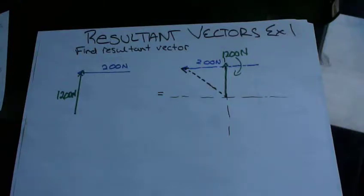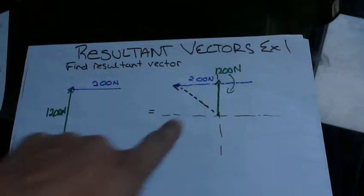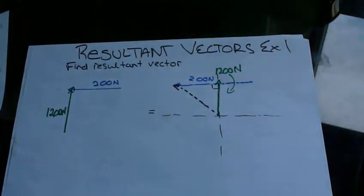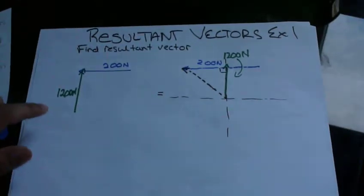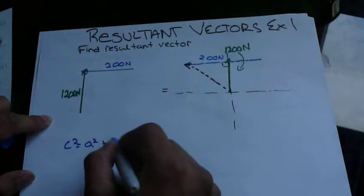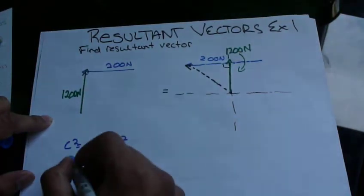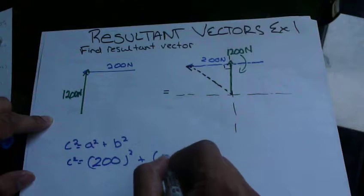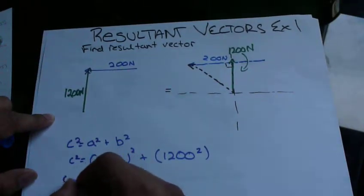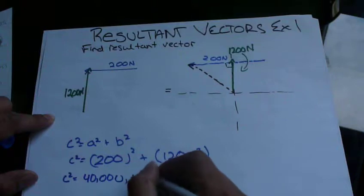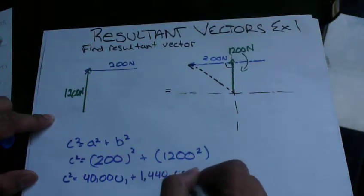Okay. So how are we going to get this resultant vector? Well, as you can see here, there's a nice little right triangle. And we know with right triangles, we can use Pythagorean's theorem. So let's do that right now. C squared equals A squared plus B squared. So C squared equals 200 squared plus 1200 squared. C squared equals 40,000 plus 1,440,000.